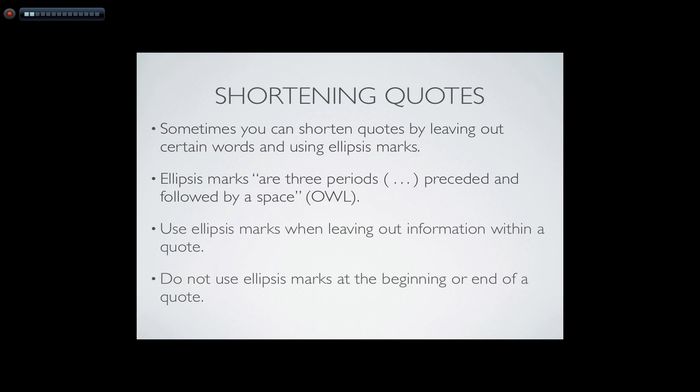Ellipsis marks are three periods — that's what you see in the parentheses there — three periods that are preceded and followed by a space. You should use ellipsis marks when leaving out information within a quote, but don't use them at the beginning or end of a quote. So I'm going to show you some examples right now.